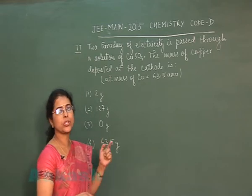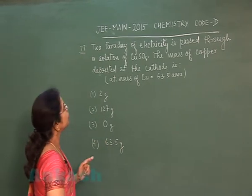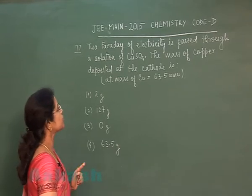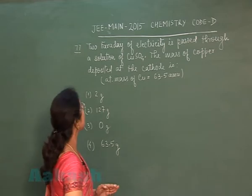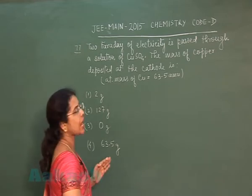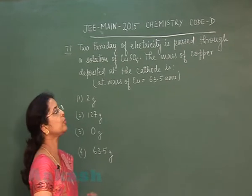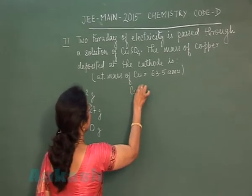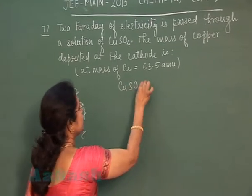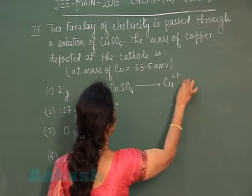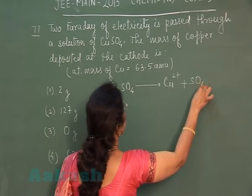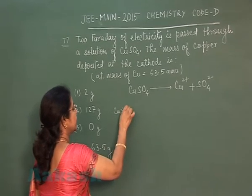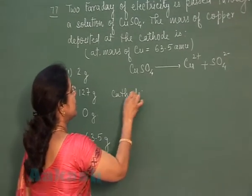Question number 77: 2 Faraday of electricity is passed through a solution of copper sulfate. The mass of copper deposited at the cathode is — we are performing electrolysis of aqueous copper sulfate solution. The ions present are copper ion and sulfate ion. Reduction reaction will take place at the cathode.